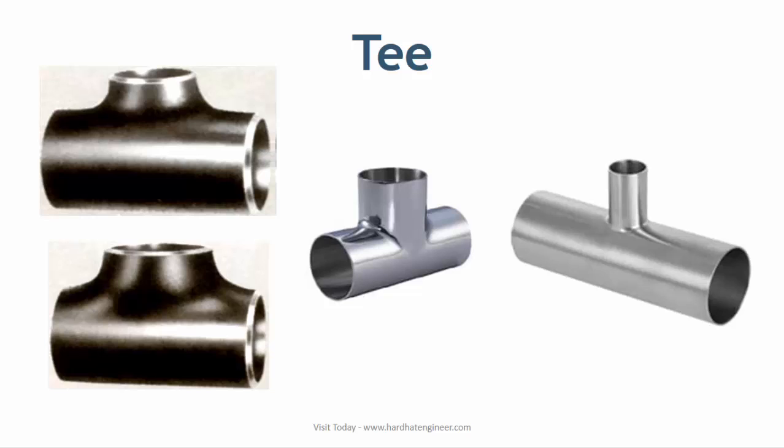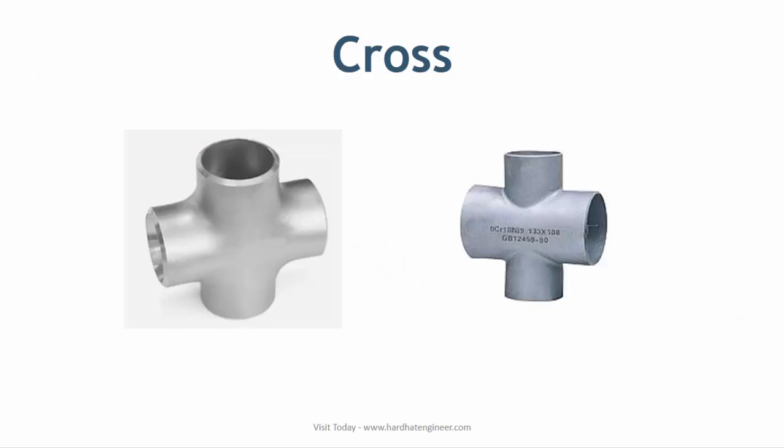Cross. Crosses are also known as four-way fittings. A cross has one inlet and three outlets, or vice versa. Generally, crosses are not used in process piping to transport fluid, but forged crosses are used sometimes in fire water sprinkler lines.